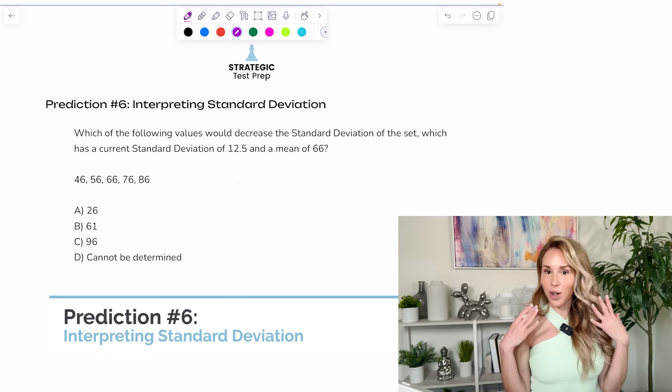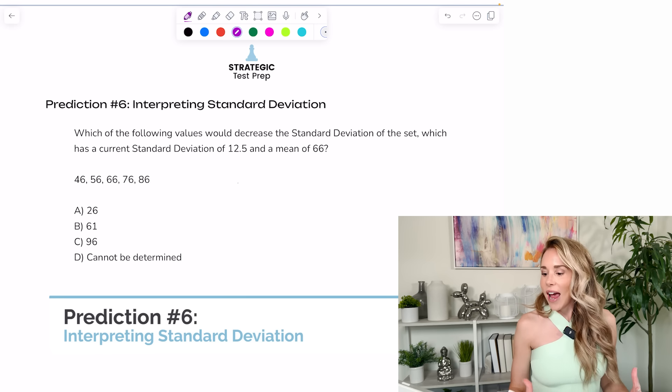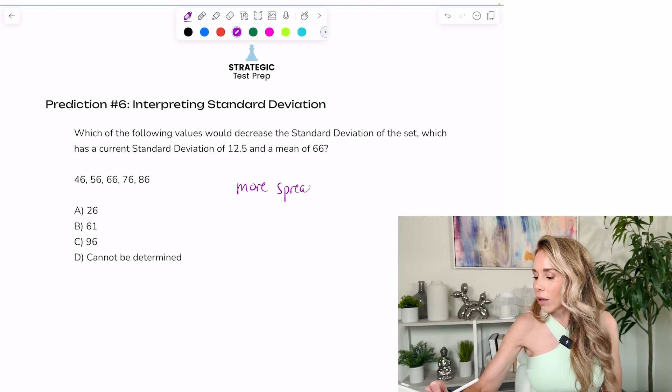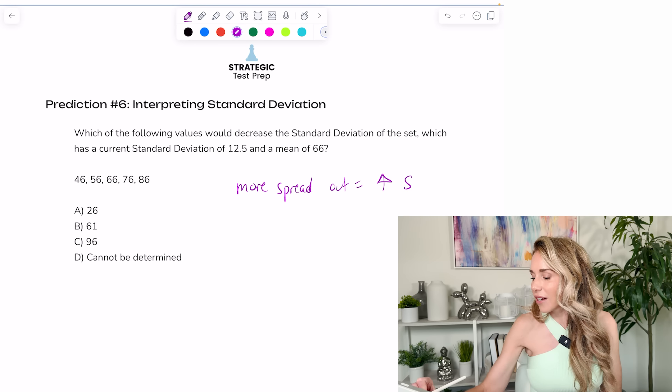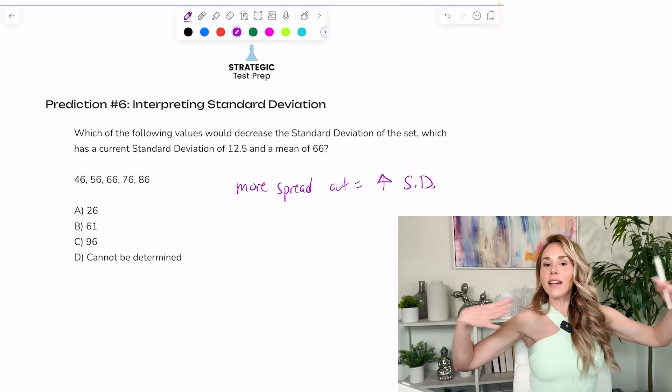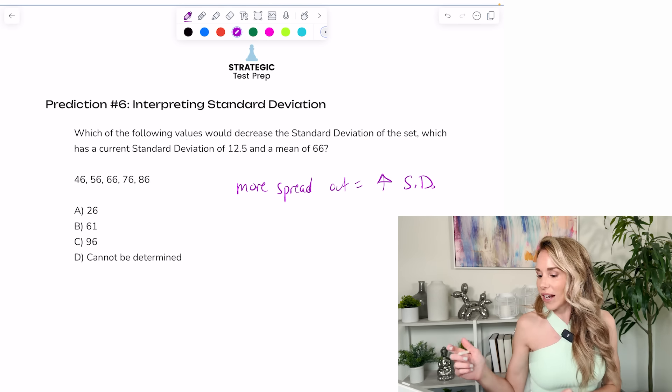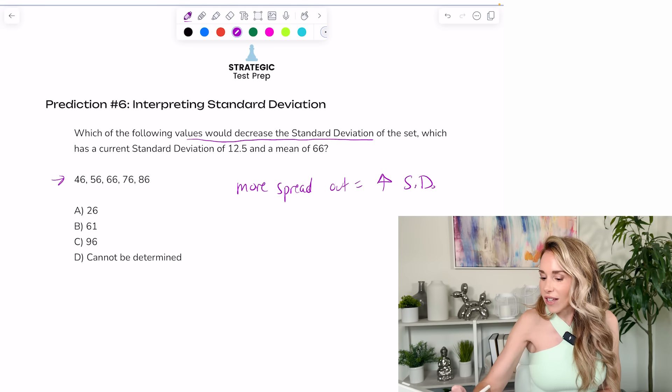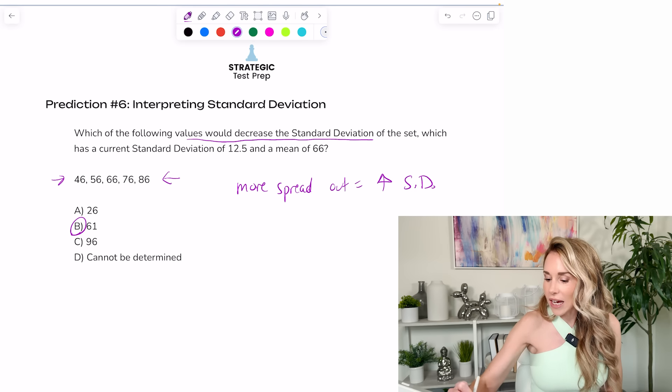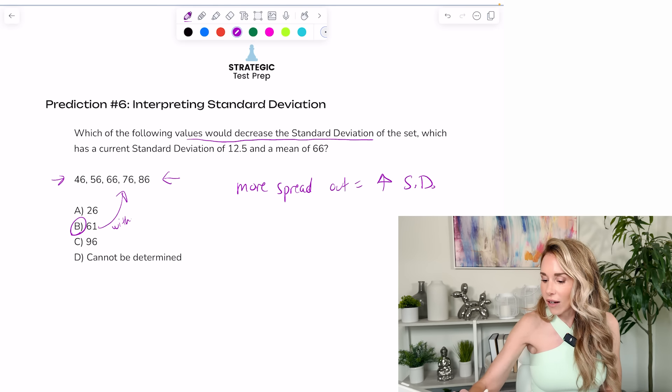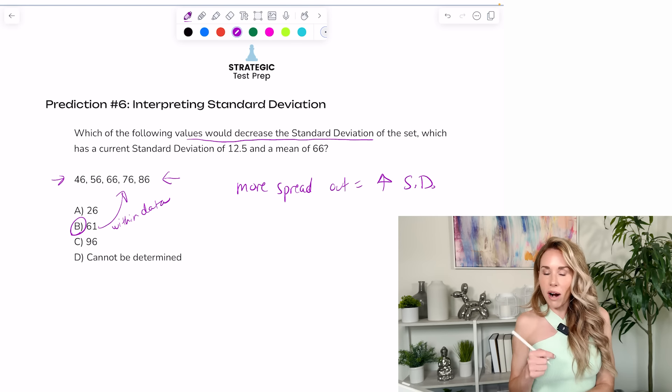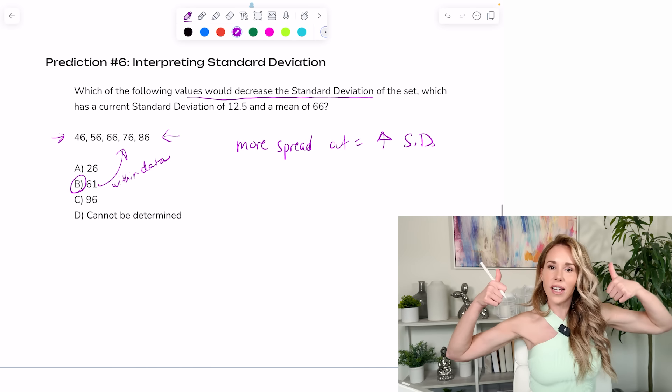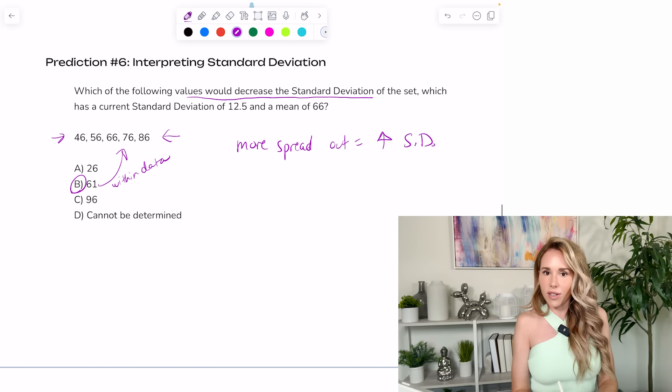My sixth prediction is they're going to ask a question about standard deviation. And what you need to understand about standard deviation is more spread out equals a higher standard deviation. So if your data is more spread out, that will increase the standard deviation. Now they said, what value would decrease the standard deviation? Here's the set. So what I'm going to do is I'm going to pick B because that number is already within the data. It's not making it more spread out. A and C would make that data more spread out and would increase the standard deviation. So go with something that's already close to the mean.